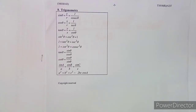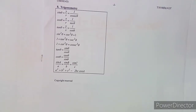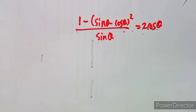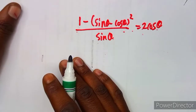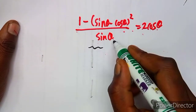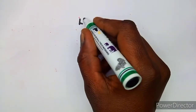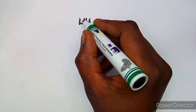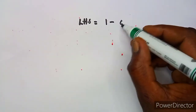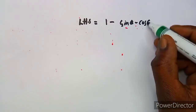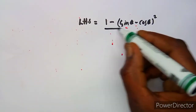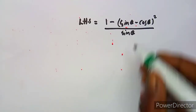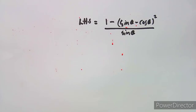Let's work through it stage by stage. When you are to prove an identity, you have to choose which side you're going to work from. In this case, I'm going to work with the left-hand side. I'm going to write the left-hand side as it is: sine theta minus cos theta, all squared, over sine theta.